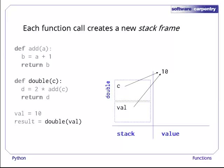Since double immediately calls add, Python immediately pushes another frame on top of the stack. Since add also only has one parameter, this frame initially only contains the variable a. Our 10 is now pointed at by three aliases, one in each of three different frames.